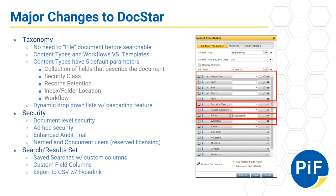There are also nice security features including what we call ad hoc security. As part of a workflow, you can change the security — somebody captures something, you can take away their security — as well as document level security, so you can be very granular in terms of access to documents. The audit trail is pretty enhanced; it actually tracks 124 different actions that happen in the system, accessible from the document or from the admin tab.